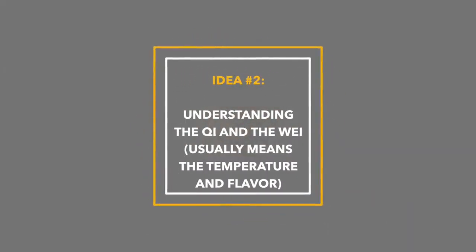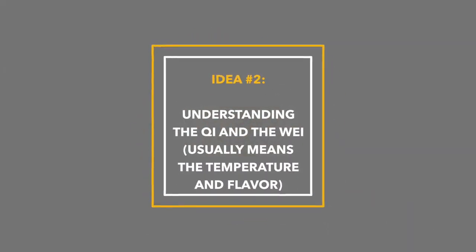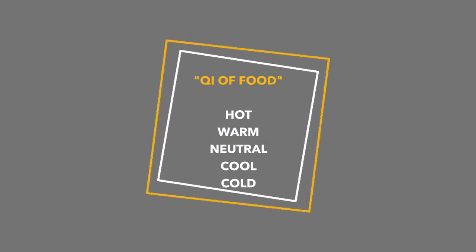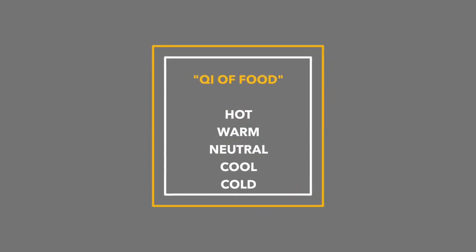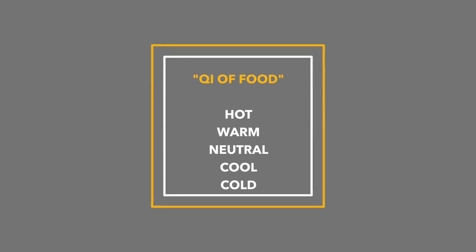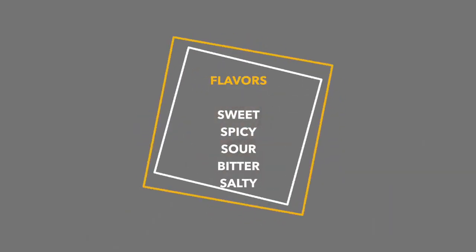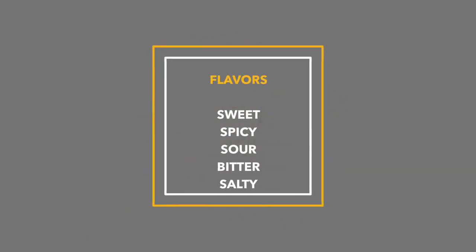The first concept here is understanding the energetics of food — what this means is understanding the chi and the flavor. The chi is typically the temperature of the food, and the flavor refers to the five flavors we just talked about. The chi could be hot, warm, neutral, cool, or cold. The flavors are typically sweet, spicy, sour, bitter, and salty.